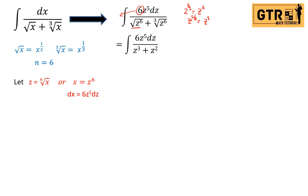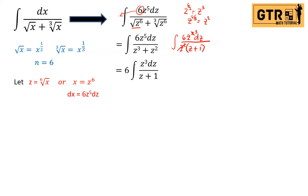We can simplify by factoring out z squared from the denominator, giving z squared times (z plus one). Canceling z squared and subtracting exponents (five minus two), we get six z cubed over (z plus one). Moving the six outside: six times the integral of z cubed dz over (z plus one).